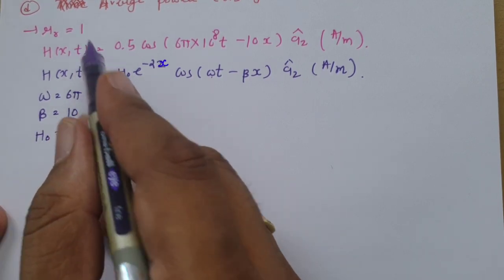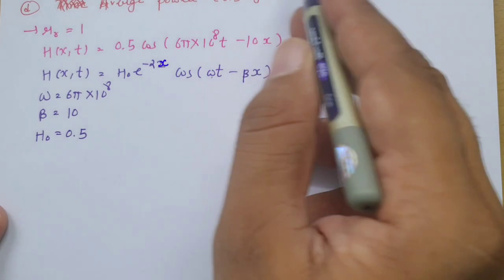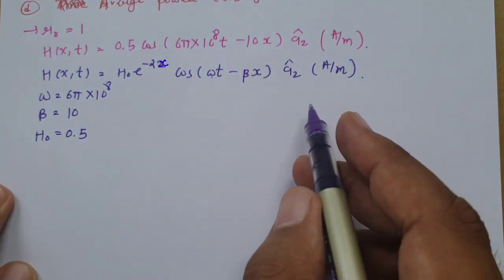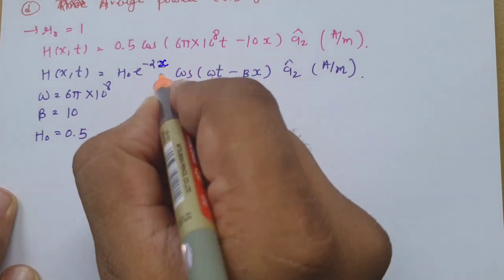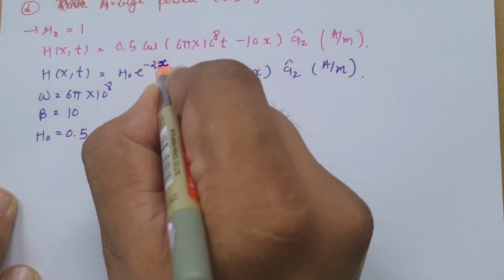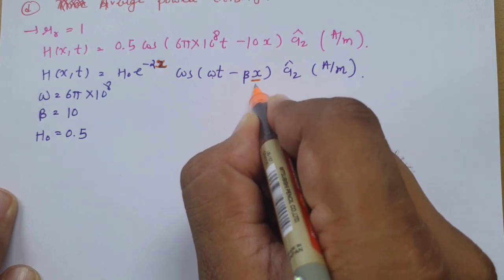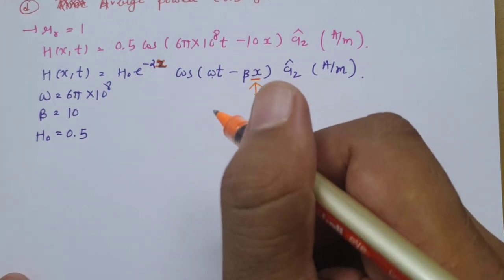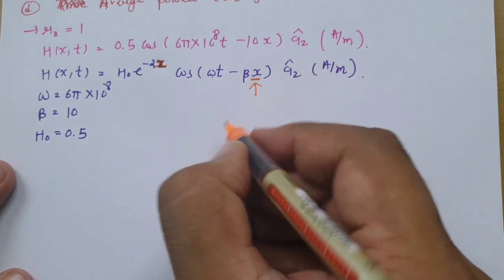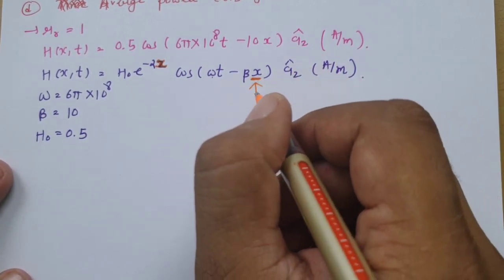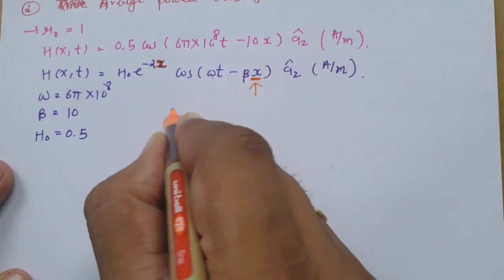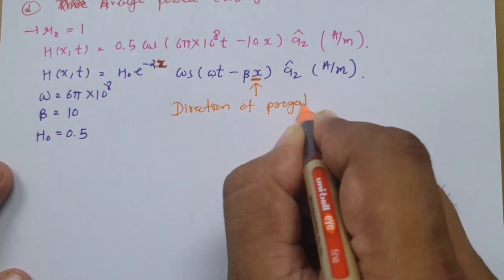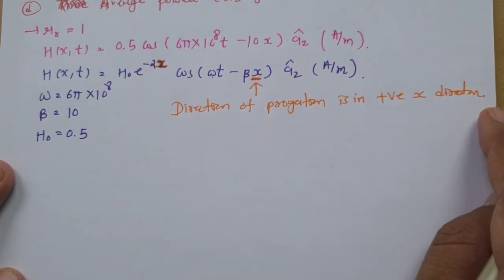Now, this parameter β being associated with x indicates the direction of wave propagation. Since β multiplies x, the wave is propagating in the positive X direction. So the direction of propagation is positive X direction — this is our first answer.